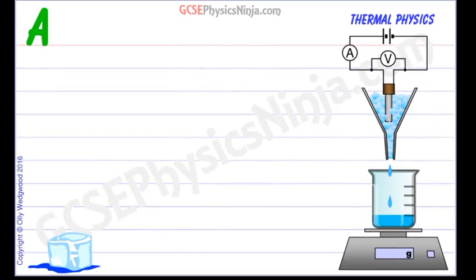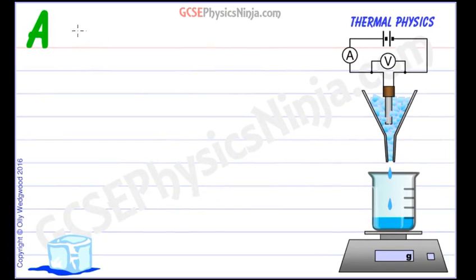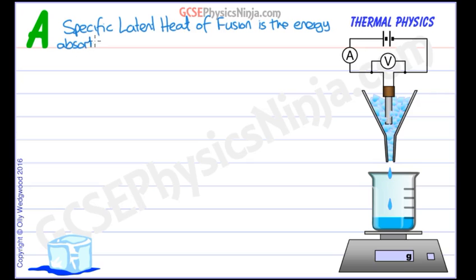So first of all, let's take a look at a definition of the specific latent heat of fusion. Specific latent heat of fusion is the energy absorbed or released. Now here's the important bit: specific means per kilogram. So it's the energy absorbed or released per kilogram of substance.